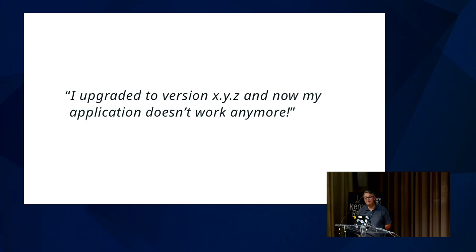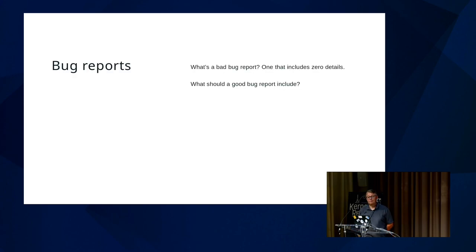What is a good versus bad bug report? This might seem like common sense but in my experience it's not very common. Here's an example of something you might get: 'Upgraded to this version and now my application doesn't work.' That's a bad bug report — it has zero details. The person is clearly angry and that tells us nothing. So what should a good bug report include?